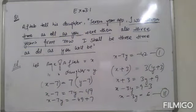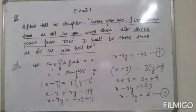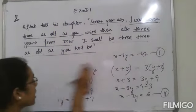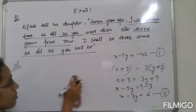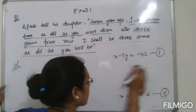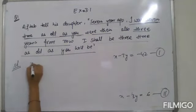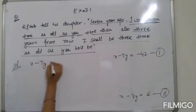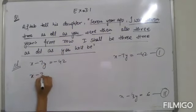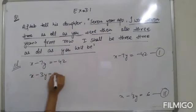Now we will solve this. We will erase the working and give the graphical representation. The first equation is x minus 7y equals negative 42, and the second equation is x minus 3y equals 6.